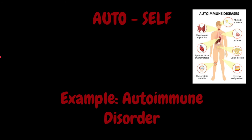Our last prefix for this video is going to be auto, which means self. An example of this prefix is going to be autoimmune disorder. Autoimmune disorder is a disease where our immune cells attack our own cells and tissues. If you look at the picture on the right, there are just a few examples of the different types of autoimmune diseases a person can have.